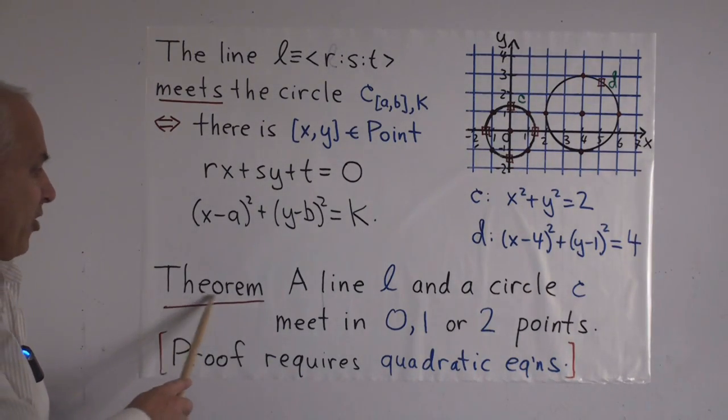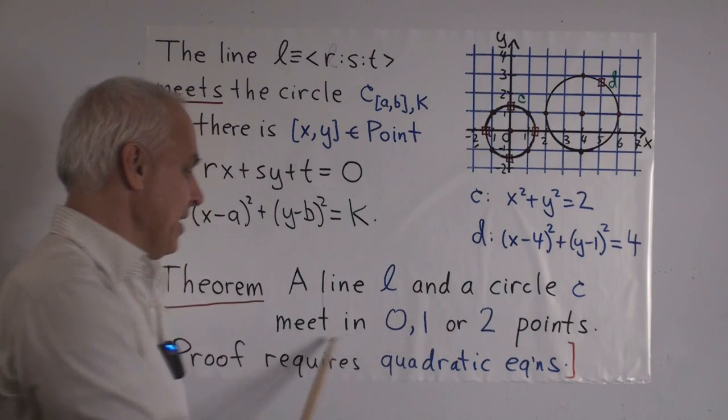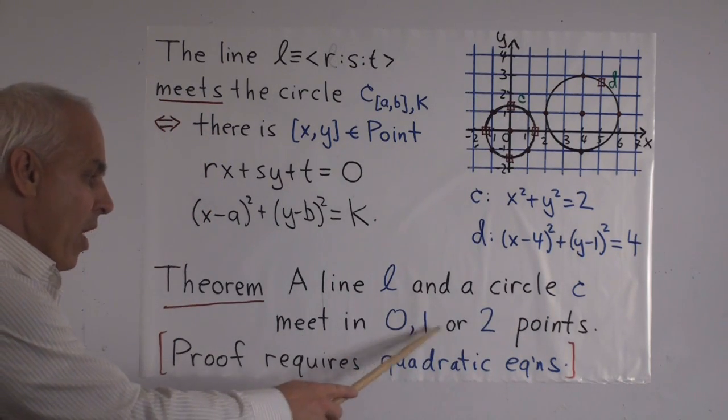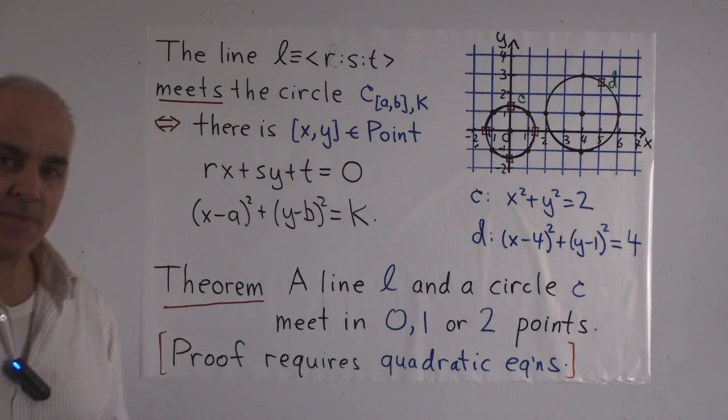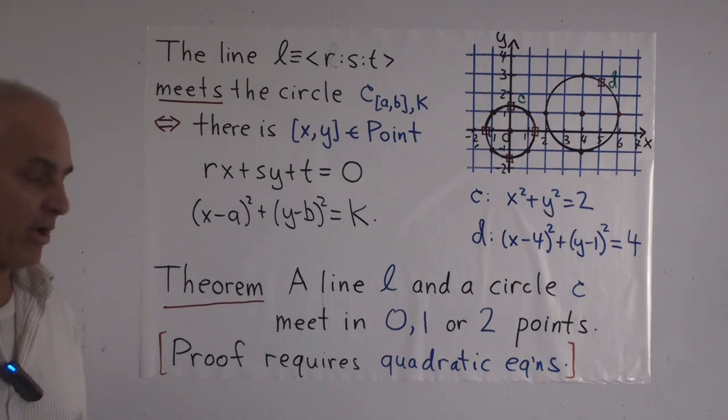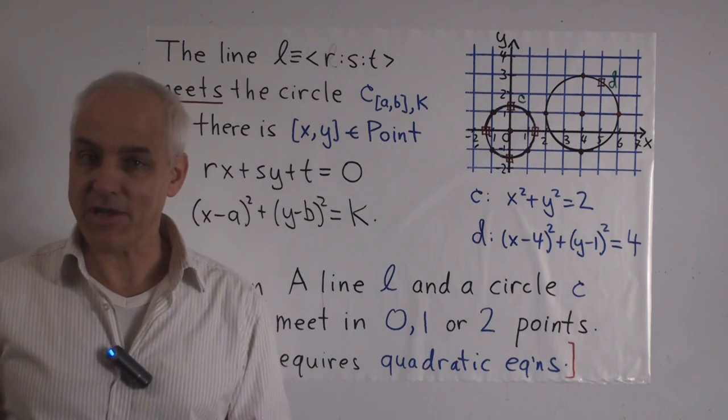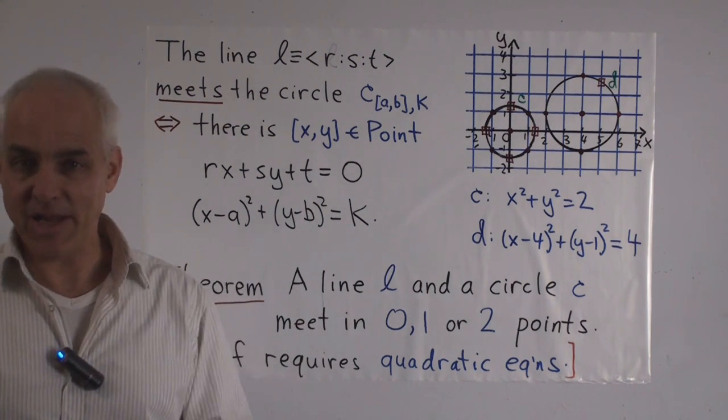So when a line and a circle meet is a rather subtle number theoretical business. And it's a theorem that any line L and any circle C meet in either zero, one or two points. And to prove that, we're going to require a little bit of algebra using quadratic equations. So that will come a little bit later.